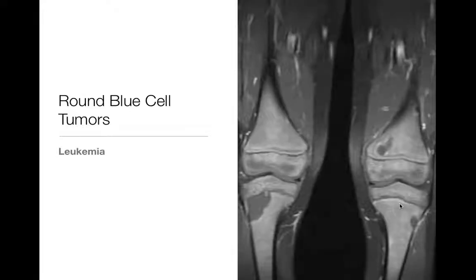Leukemia is pretty much the same thing as lymphoma — there's no really good way to differentiate them on imaging. This was an example of leukemia in a child showing multiple lesions. This is a post-gadolinium MR, and these are all leukemia infiltrates.